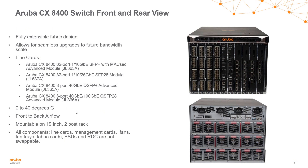This is the front and back view of the 8400 CX switch. It's a fully extensible design that allows upgrading fabrics as well as line cards for future bandwidth scale. Currently we have four line cards: two 32-port modules — a 1/10 gig SFP+ module and a 1/10/25 gig SFP28 module. The 10 gig model is MACsec capable, however the MACsec code has not been released yet. We also have two higher speed modules: an 8-port 40 gig module and a 6-port 100 gig module that supports QSFP28. The airflow is front to back and it's a standard 19-inch rackable switch in either two-post or four-post configurations. All components are hot-swappable and redundant.